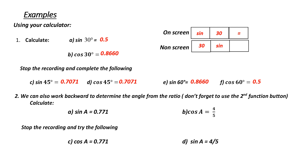If you look at example 2a, sine of A is equal to 0.771. What would we do to find angle A? We would have to punch in the opposite of sine, or second function sine, then 0.771 equals. That's for an on-screen calculator. For a non-screen, it would be 0.771, then second function sine. You should get the answer of 50.4 degrees.